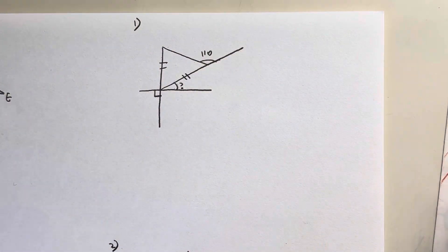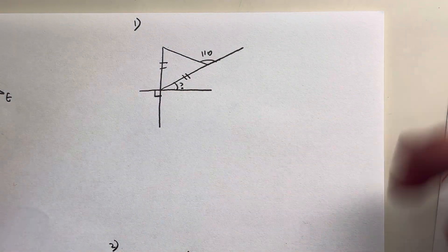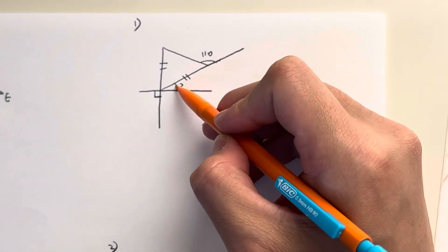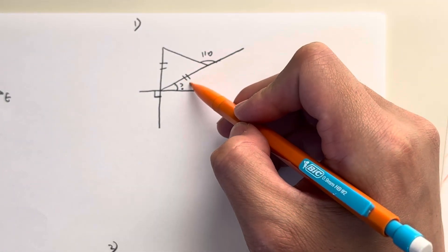Today we're going to solve these two geometry questions and let me teach you all the different rules you need to solve. So first for number one, what do I see? I'm trying to find this angle right here which I'm just going to call angle A.